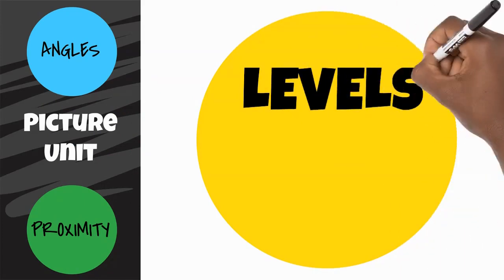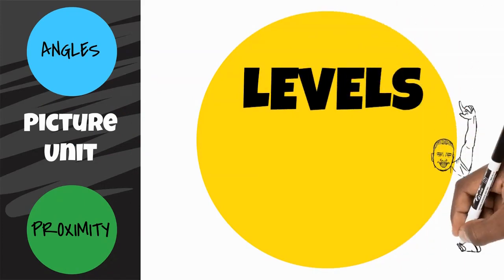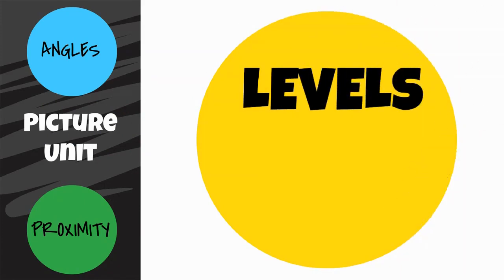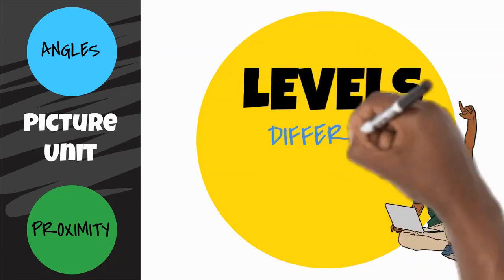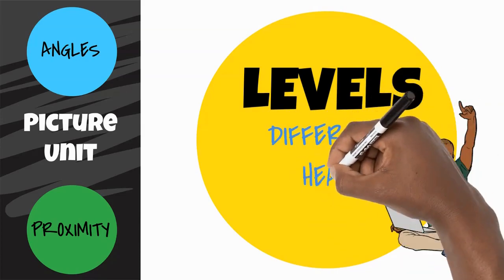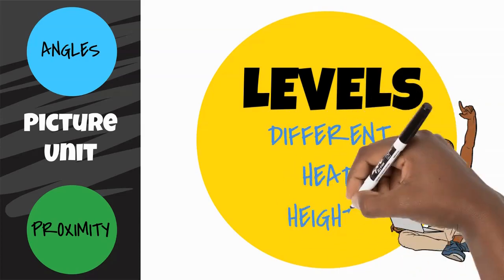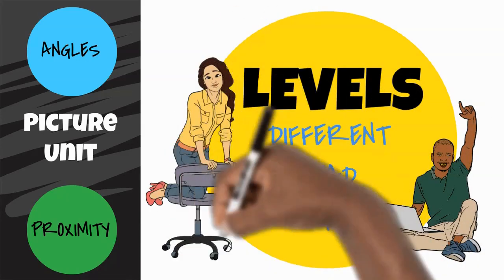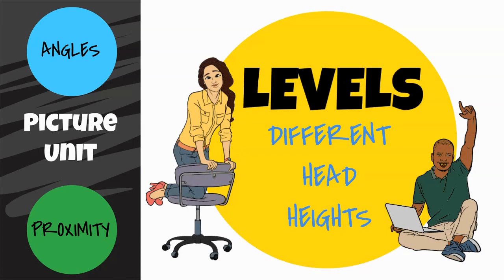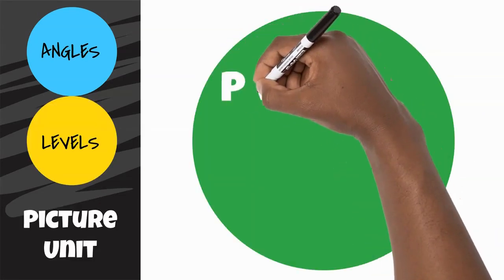Next are levels. When we say levels, we're referring to the heights of actors' heads. Head heights should be varied, unless there is a specific reason why they are the same. By choosing a variety of head heights, we make the picture more interesting.